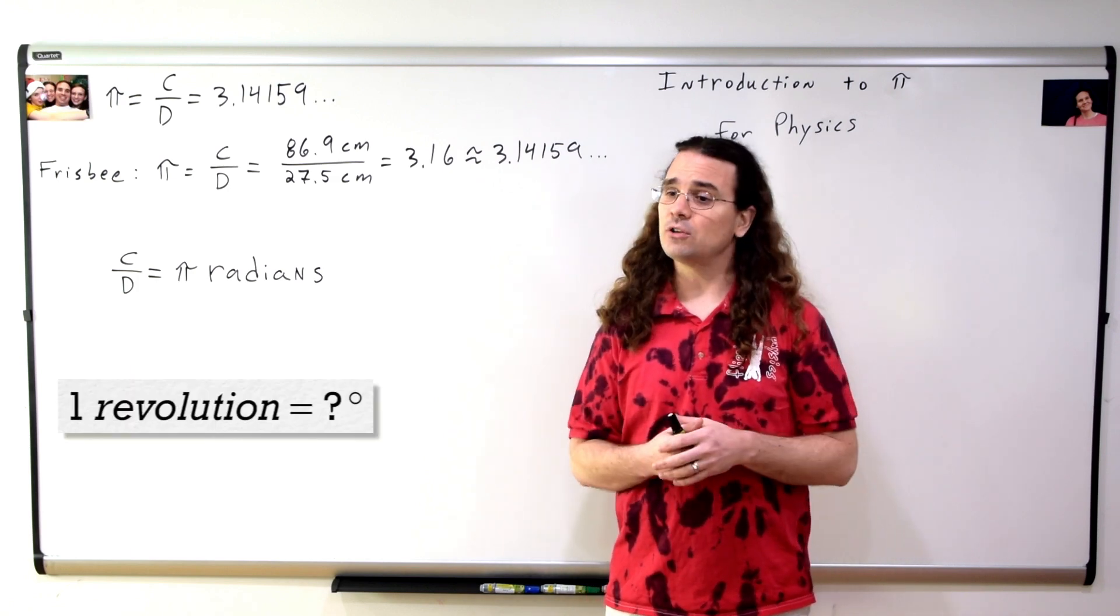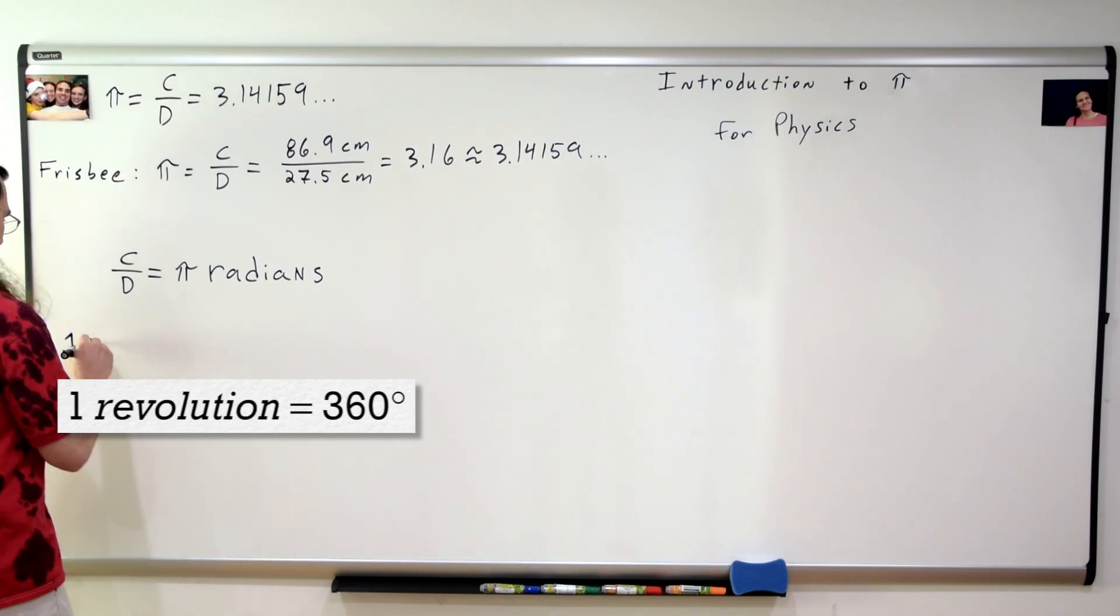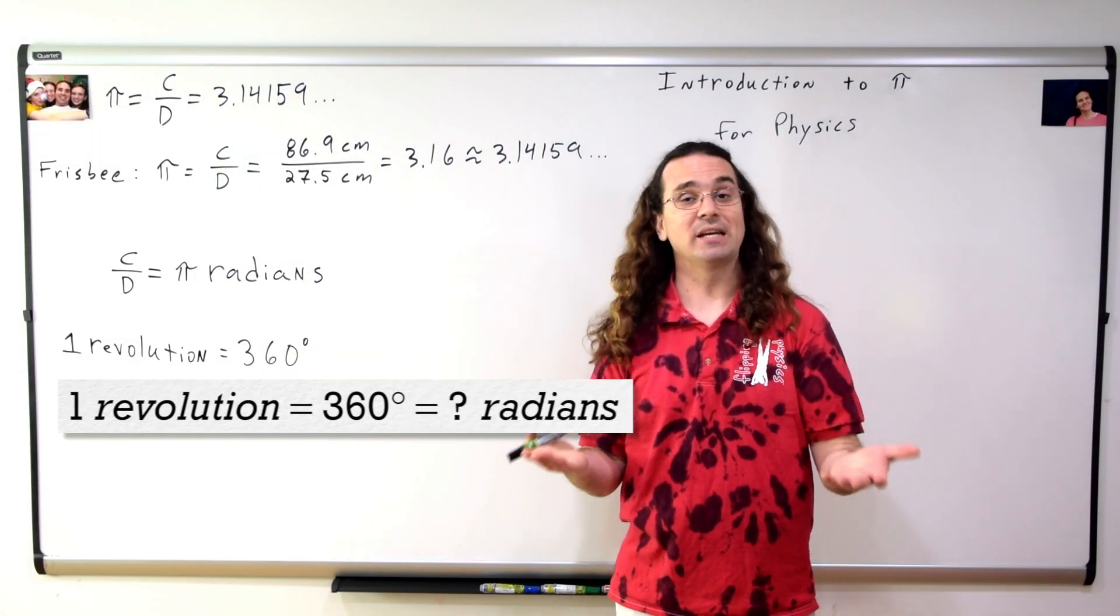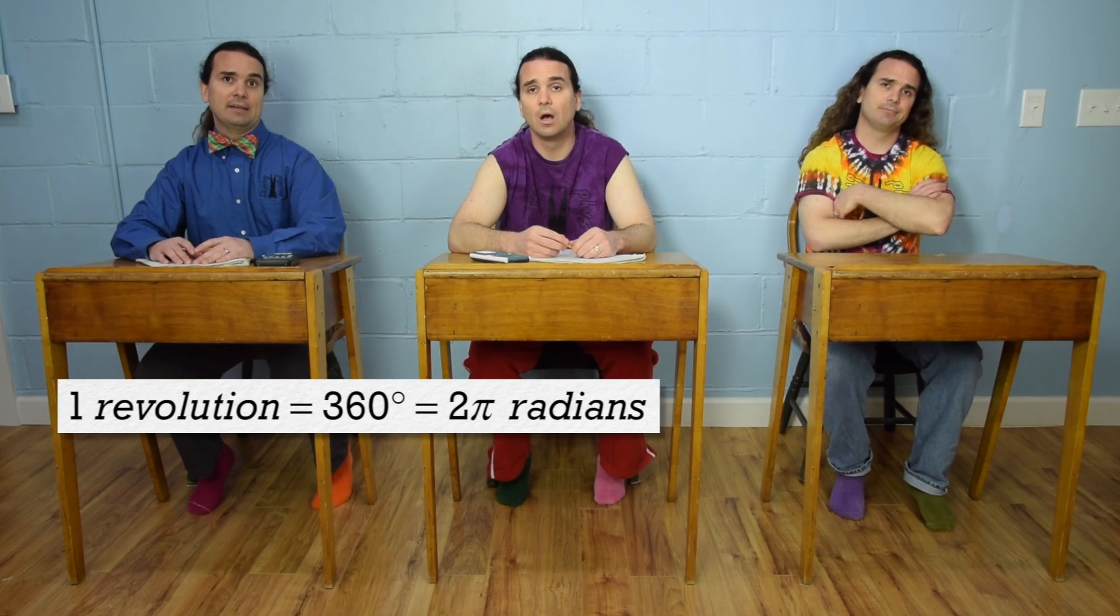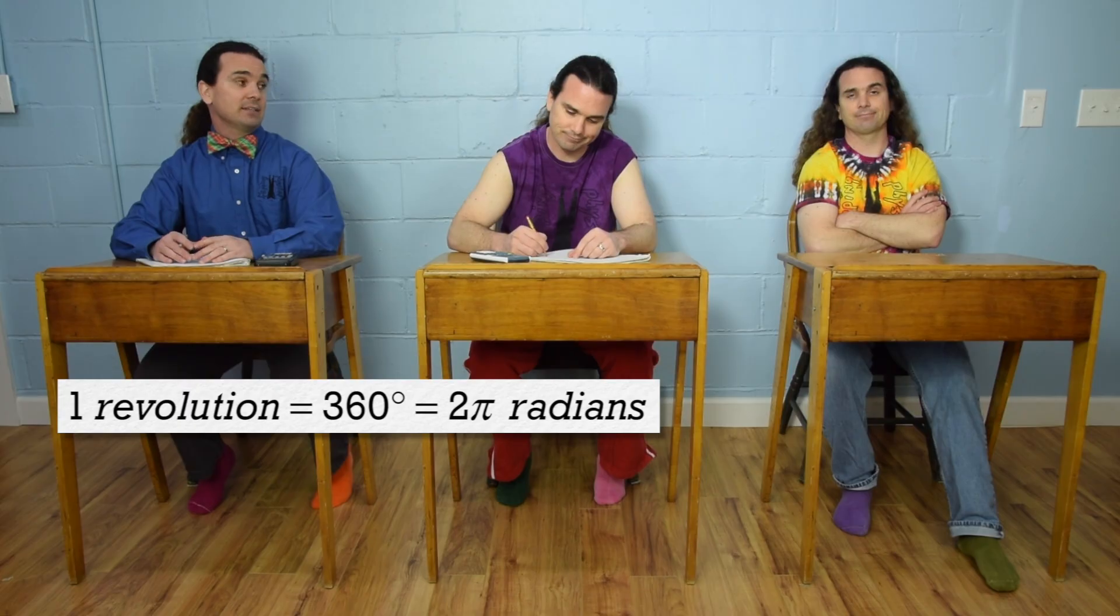Class, one revolution equals how many degrees? 360. Mr. P, which equals how many radians? 2 pi. Don't forget the pi, 360 degrees equals 2 pi radians.